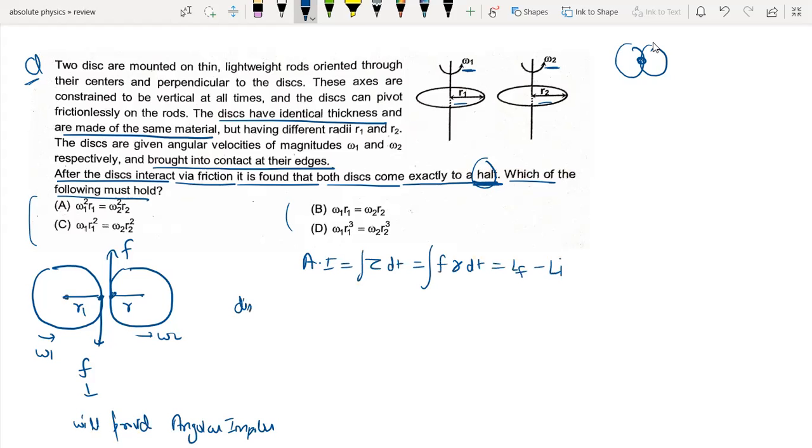For disk 1, F into r1 dt equals minus L, which equals I times omega. I is m r1 squared by 2 times omega. This equals F dt times m r1 by 2 times omega 1.